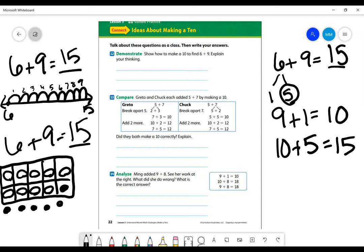So it says show how to make 10 to find 6 plus 9. Well, we explained that over here. So I'm going to leave that be. Let's go to number 13. It says Greta and Chuck each made 5 plus 7 by making a 10. So Greta, she took 5 and broke it into 2 plus 3. Then I'm going to circle 2 because then she took 7 and added the 3 from her 5 to make a 10. And then she took her 10 and added those 2 extra ones to make 12. And 5 plus 7 or 7 plus 5? 7, 8, 9, 10, 11, 12. That is a way she could show that.